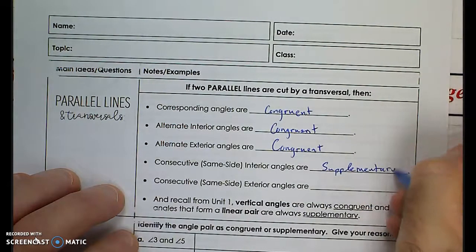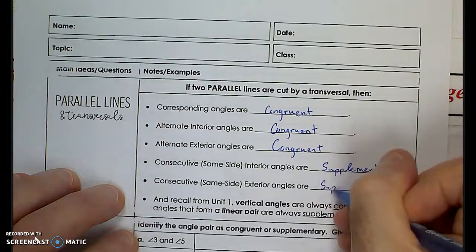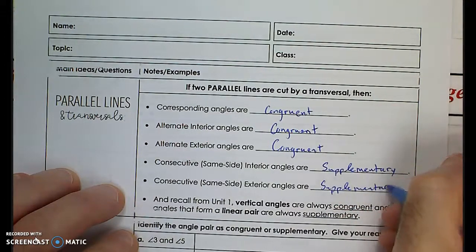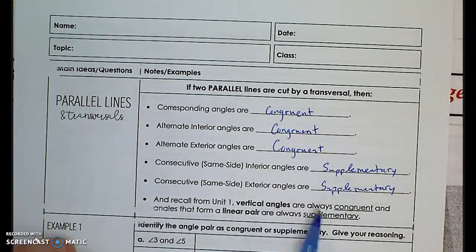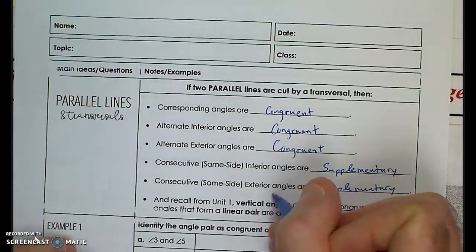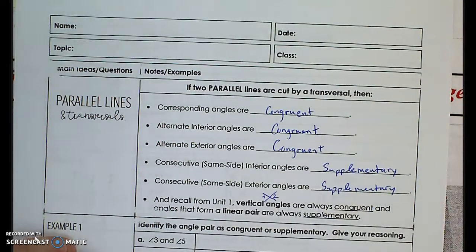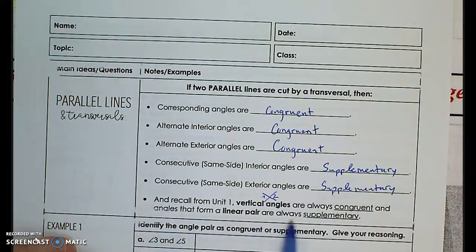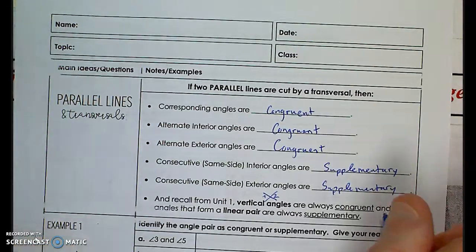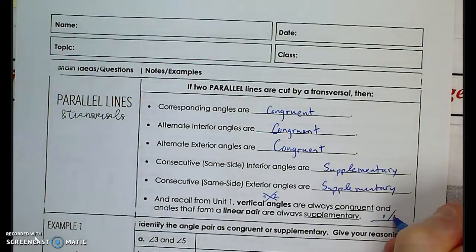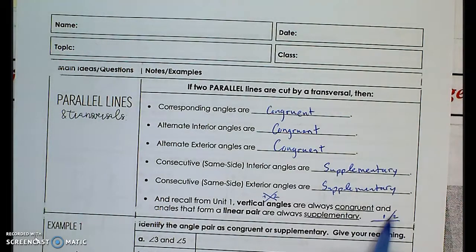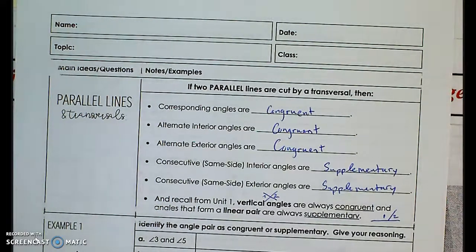Supplementary means adds up to 180 degrees. So same side interior and exterior angles are supplementary. Recall from unit one that vertical angles are always congruent. If I cross over two lines like this, angle one and angle two are vertical angles and they are congruent — equal measure. And angles that form a linear pair are always supplementary. A linear pair is two angles that are adjacent, sharing a side, and they add up to 180 degrees.